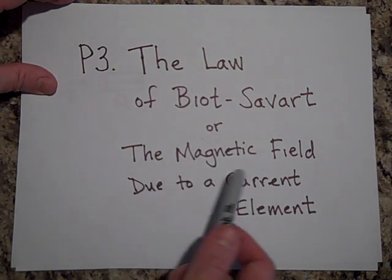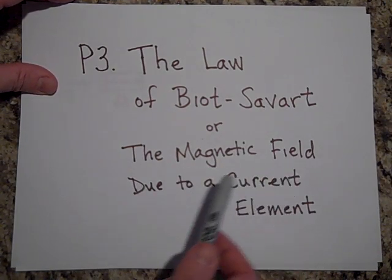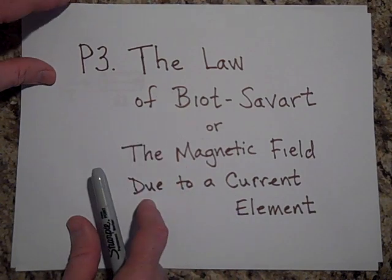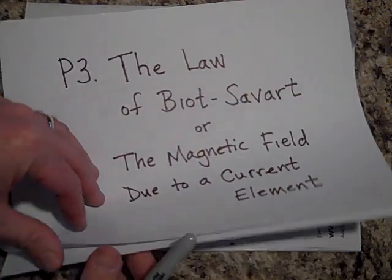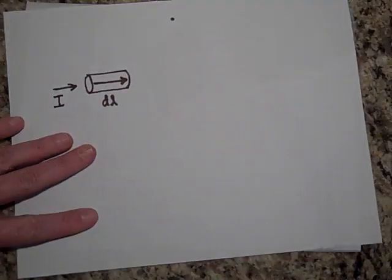Okay, calculating the magnetic field due to a current element, you would use the law of Biot-Savart. So a current element, first of all, what is a current element?